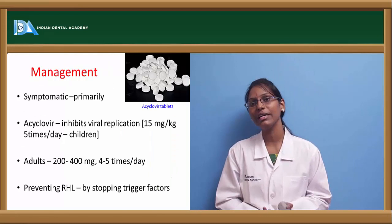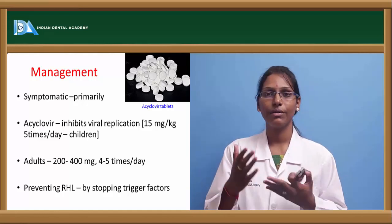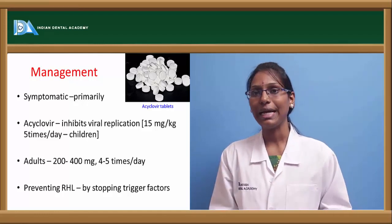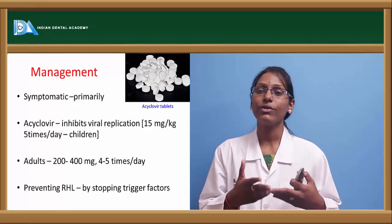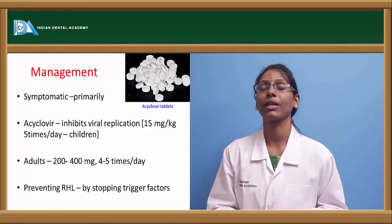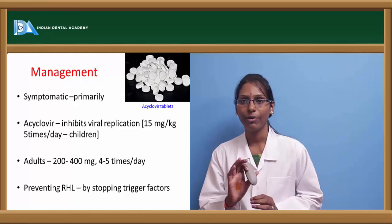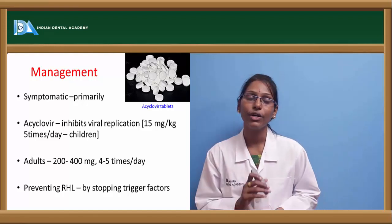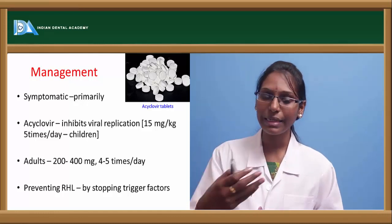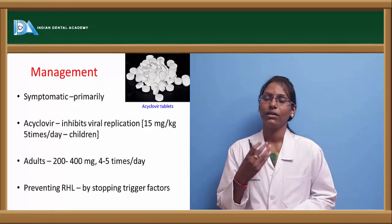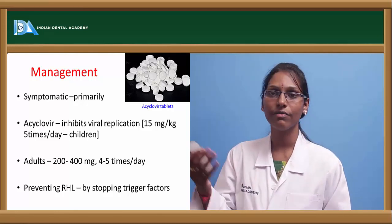Coming to management: symptomatic treatment has to be given to the patient, including lots of fluids and paracetamol or antipyretics for fever. If antiviral therapy is to be started, it must be begun within 48 to 72 hours of primary infection. Acyclovir inhibits viral replication: 15 mg per kg body weight five times a day for children; for adults, 200 to 400 mg four to five times per day. Recurrent herpes labialis can also be prevented by stopping the triggering factors already discussed.